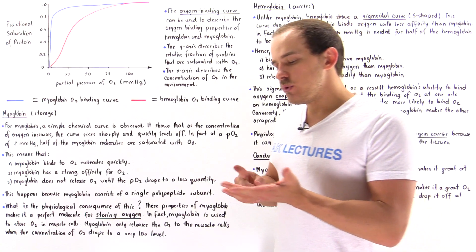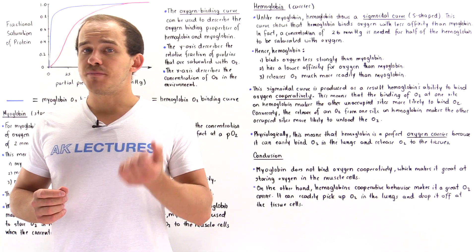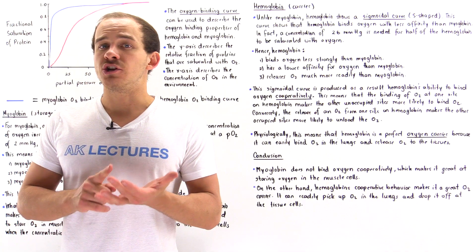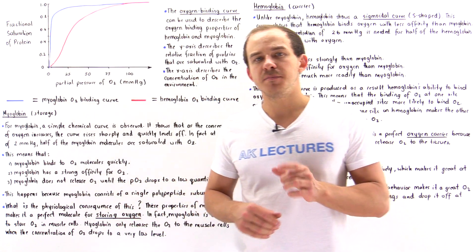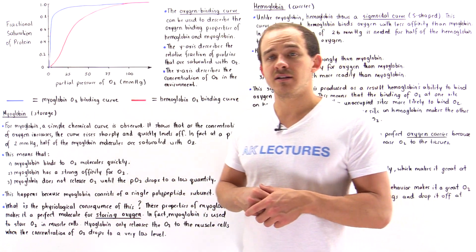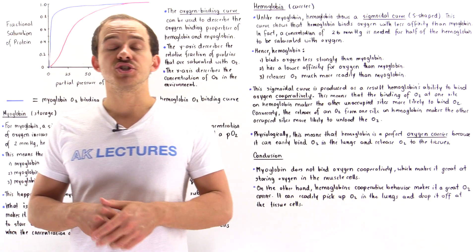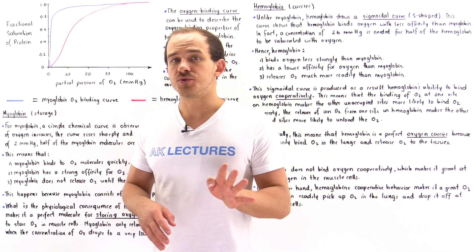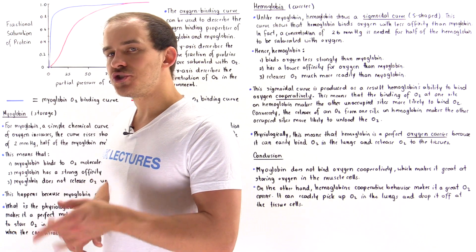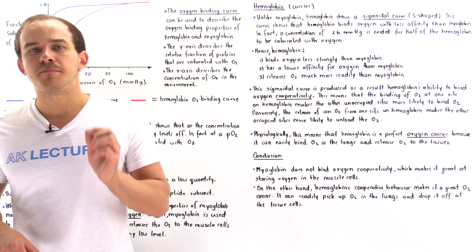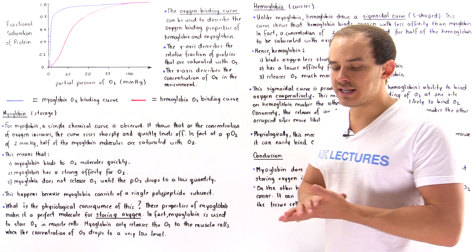These two proteins contain heme groups, and it's the heme group that is responsible for actually binding and holding onto the oxygen. In myoglobin, we have a single polypeptide chain and so we have a single heme group. But in hemoglobin, because we have four different polypeptide chains, we have four different heme groups. One heme group can bind one oxygen, which means a single hemoglobin can bind four times as many oxygen molecules as myoglobin can.